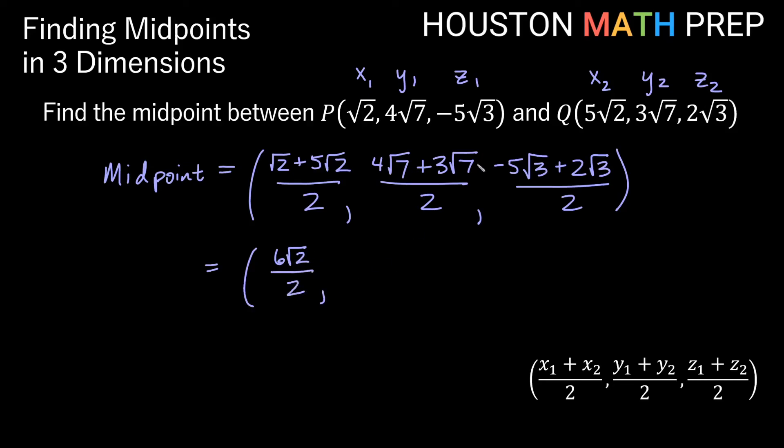Here these are both root 7 terms, like terms, right? So 4 cats plus 3 cats, 4 root 7 plus 3 root 7 is 7 root 7s over 2. And then here negative 5 root 3 plus 2 root 3 would give us negative 3 root 3 over 2.